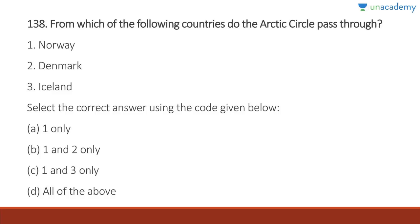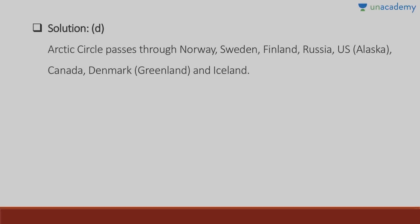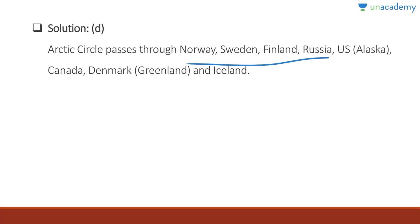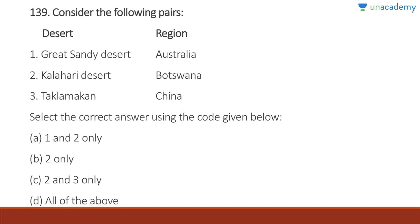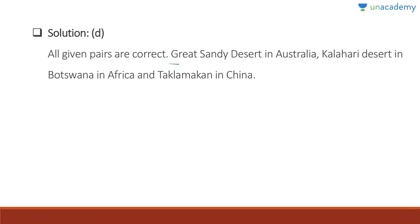Question 139 pairs: Great Sandy Desert is in Australia — 100% correct. Kalahari Desert is in Botswana (with some part in Namibia) — correct. Namib Desert is also in Namibia. Taklamakan Desert is in China — correct. Answer is D, all statements are correct. Great Sandy Desert is in Australia, Kalahari Desert is in Botswana in southern Africa, and Taklamakan is in China.